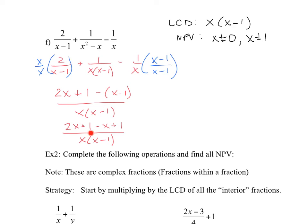Combine like terms: 2x minus x gives x, and 1 plus 1 gives 2, so the numerator is x plus 2, divided by x times x minus 1. Notice x plus 2 is the factor of the numerator — you cannot cancel x. The simplified expression is x plus 2 over x times x minus 1.